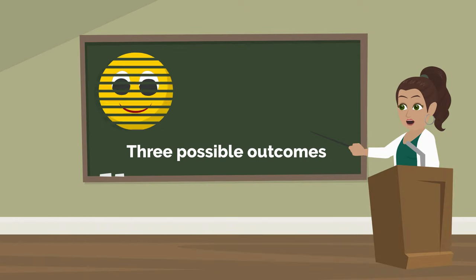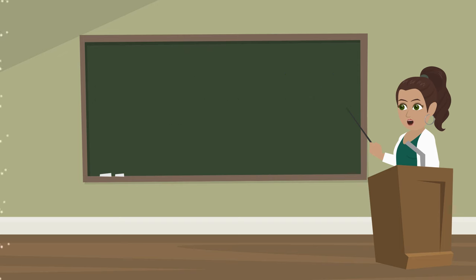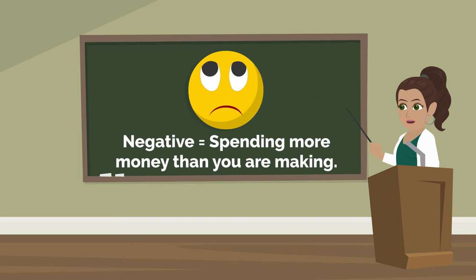When we calculate our budget, we have three possible outcomes. The first being that our budget is negative, which means that we're spending more money than we are making. Long term, that can cause financial problems.